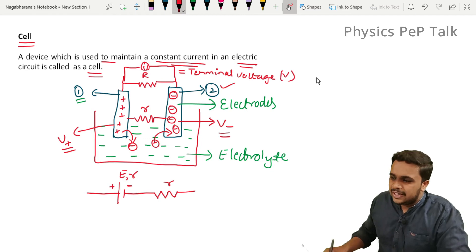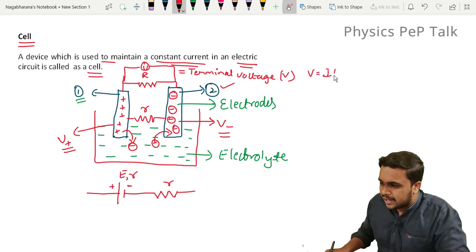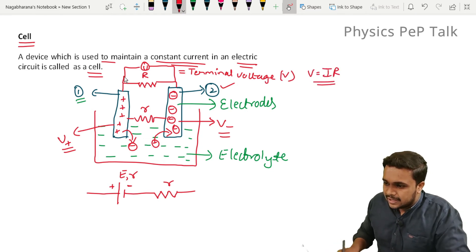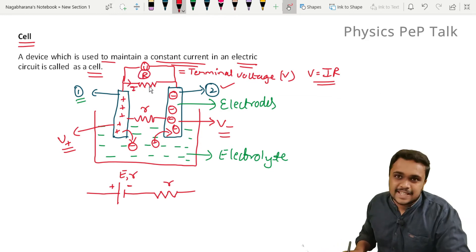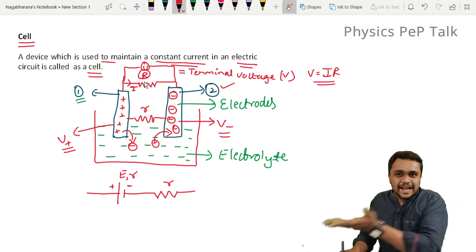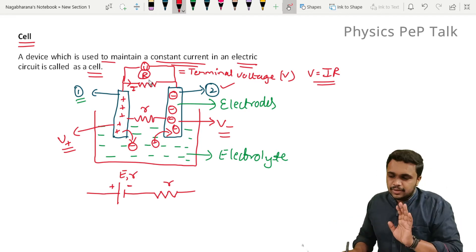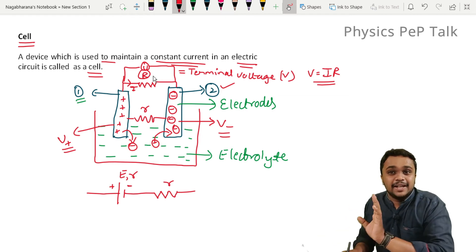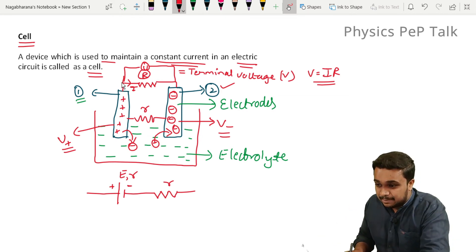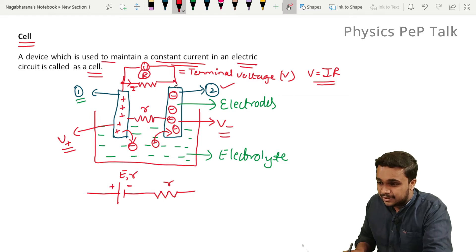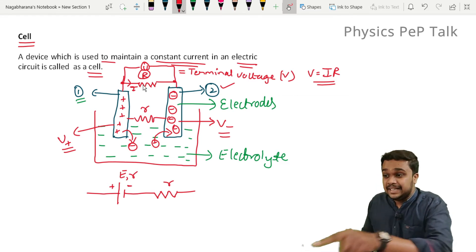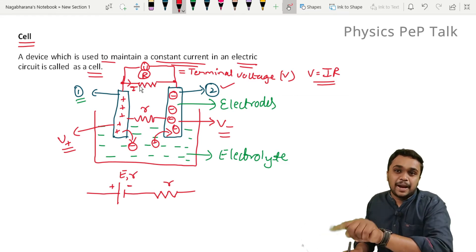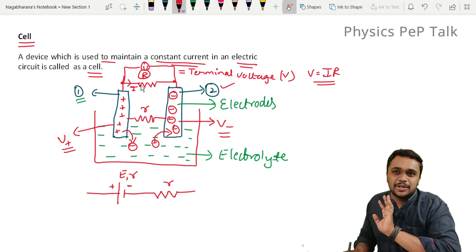From Ohm's law, V is equal to IR, where I is the current flowing through the resistor and R is the value of resistance. Terminal voltage is the potential difference across the terminals when current is being drawn from the battery, and that is called terminal voltage.